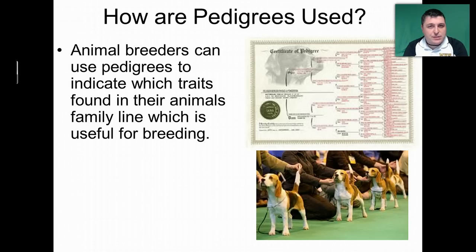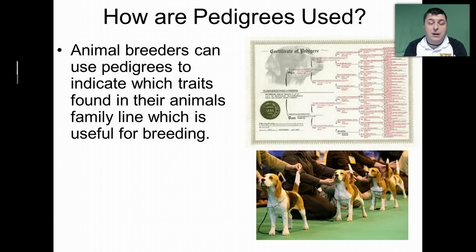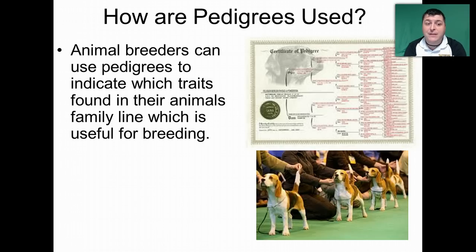There are many different uses for pedigrees. You might have heard of pedigree dog food, because pedigrees are associated often with animals — purebred animals, dogs, cats, horses. Animal breeders can use the pedigree to show what traits are found in their animal's family line, which is a very useful tool when you're breeding.